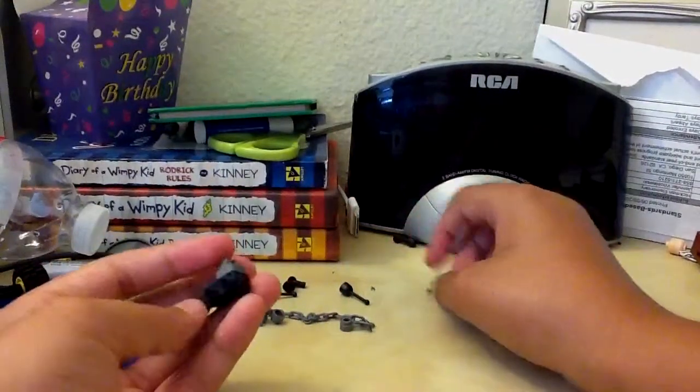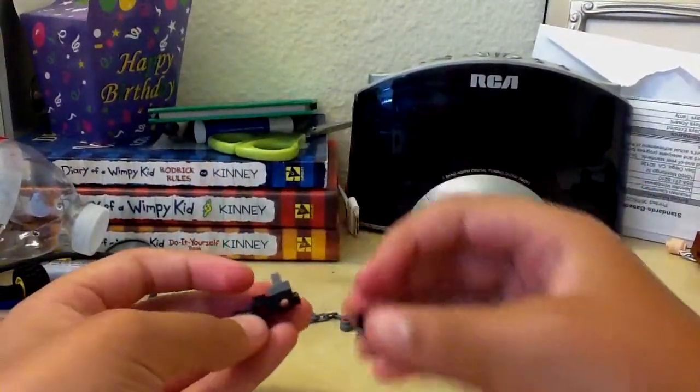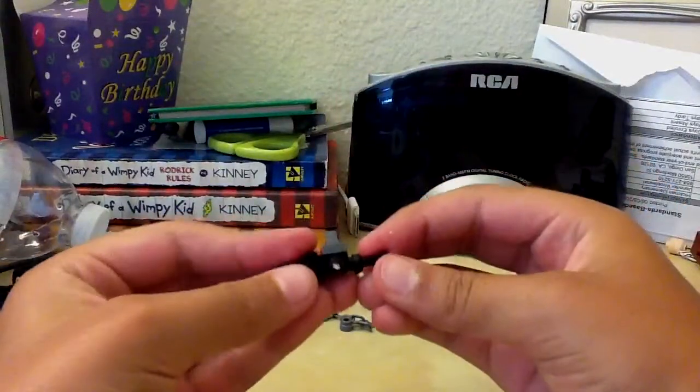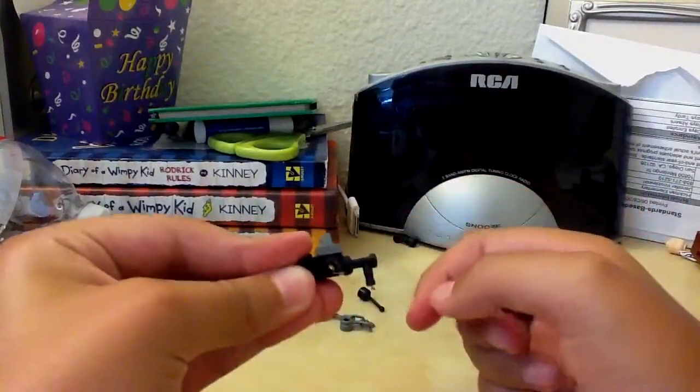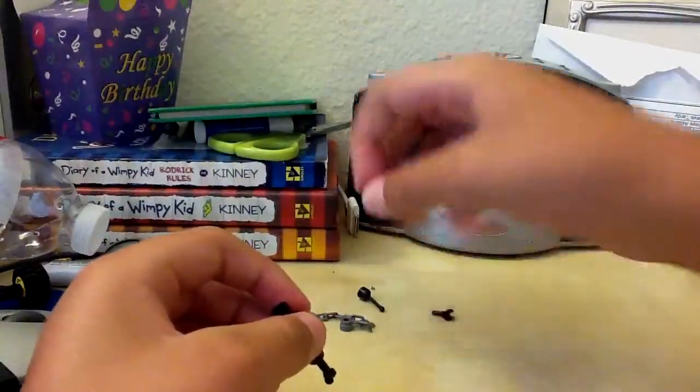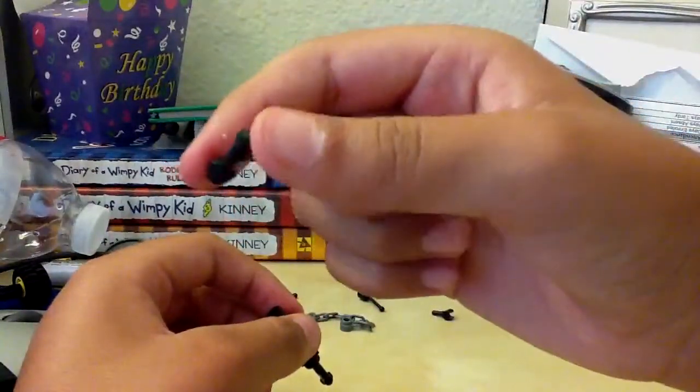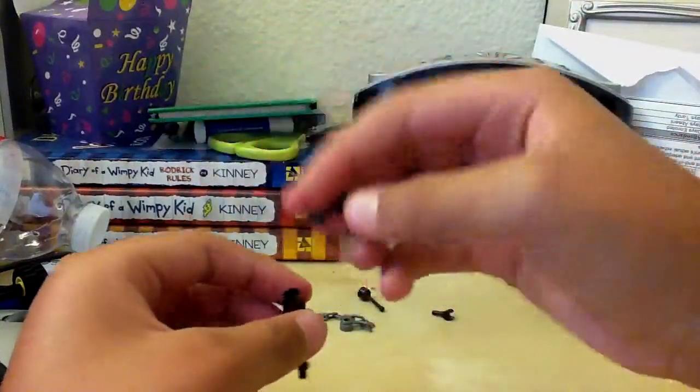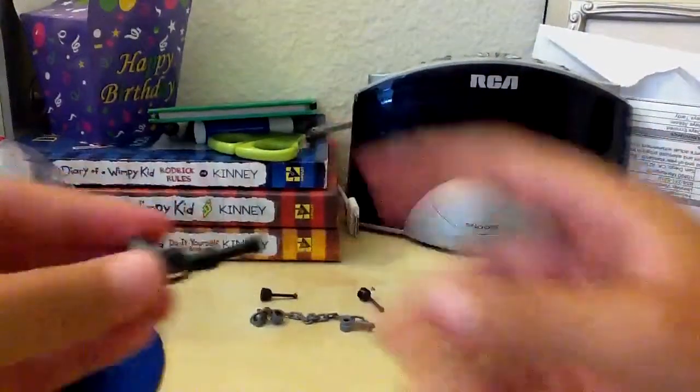Then you grab this piece and put it right over there. Grab a black lightsaber piece and put it in like this.